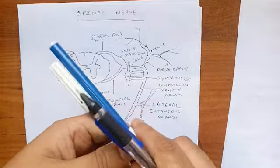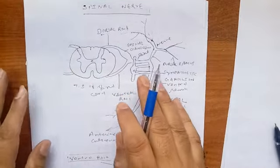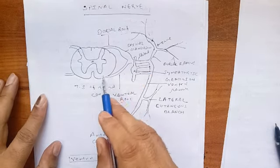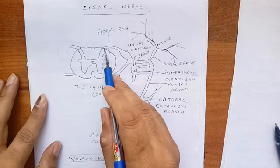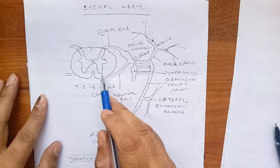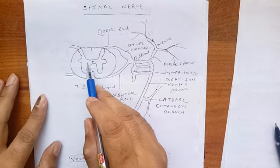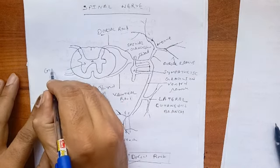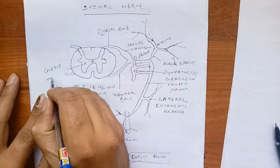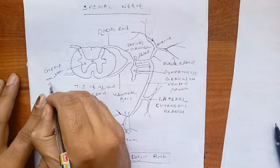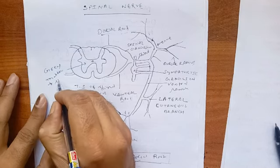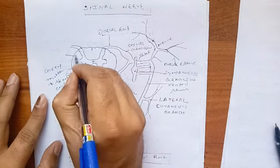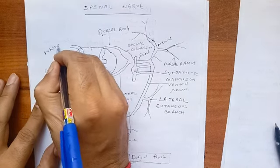Now, each spinal nerve — as seen in this figure, which is the transverse section of the spinal cord — shows the anterior horn cells, the lateral horn cells, and the posterior horn cells of the spinal cord. Here is the central gray matter of the spinal cord and this is the white matter of the spinal cord.